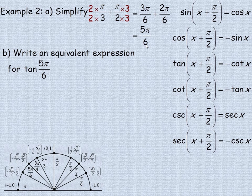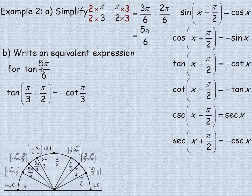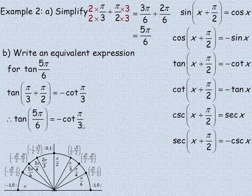Because these two angles add to 5 pi over 6, this leads into part B — we're asked to write an equivalent expression for the tan of 5 pi over 6. The tan of 5 pi over 6 can be broken down into pi over 3 plus pi over 2. Using the identity where x equals pi over 3, the tan of x plus pi over 2 equals the negative cotan of x. So the tan of 5 pi over 6 is equivalent to the negative of the cotan of pi over 3.